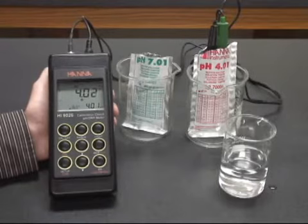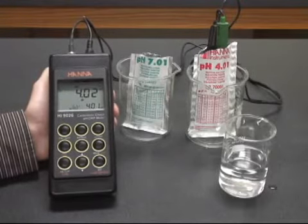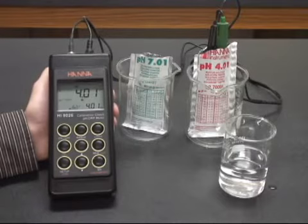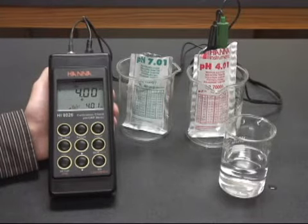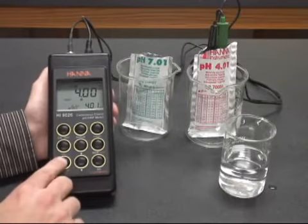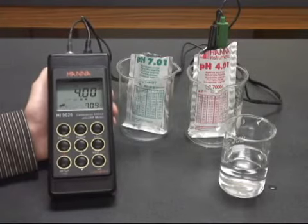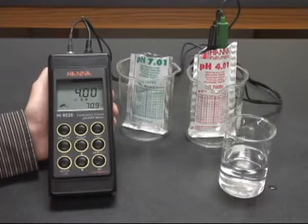And you'll see the procedure repeat as it asks you to confirm the 4.01 buffer after just a few seconds. You hit confirm again. You'll see your meter move into measurement mode, displaying the temperature and you're good to go. You are now ready to measure pH.